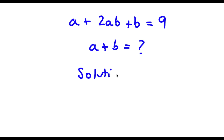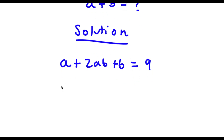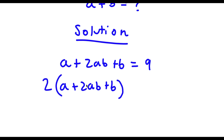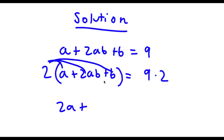For my solution, first start with a + 2ab + b is equal to 9. Now I'm actually going to multiply both sides by 2. So now I have (a + 2ab + b) times 2 is equal to 9 times 2. For 2 times (a + 2ab + b), I'm going to distribute the 2. So 2 times a is 2a, plus 2 times 2ab is 4ab, plus 2 times b is 2b. And 9 times 2 is 18.